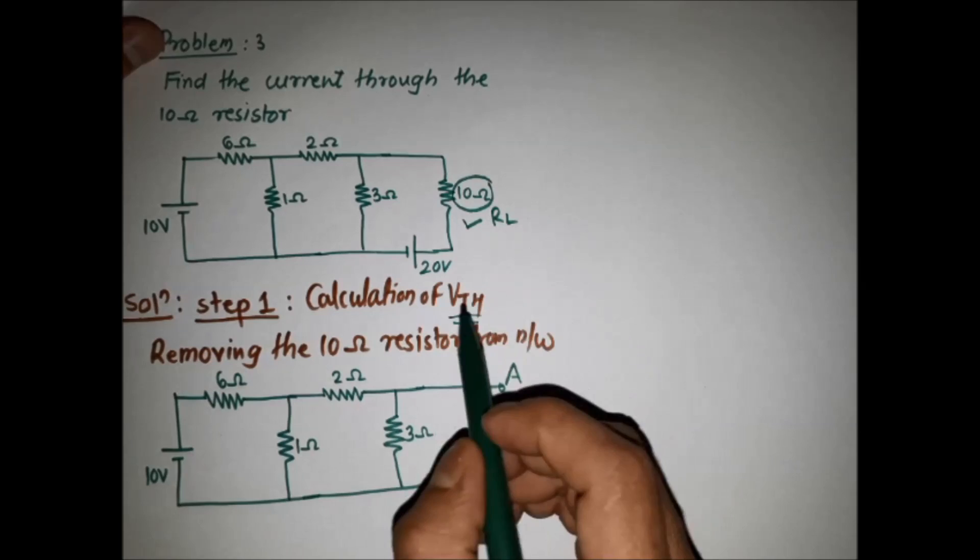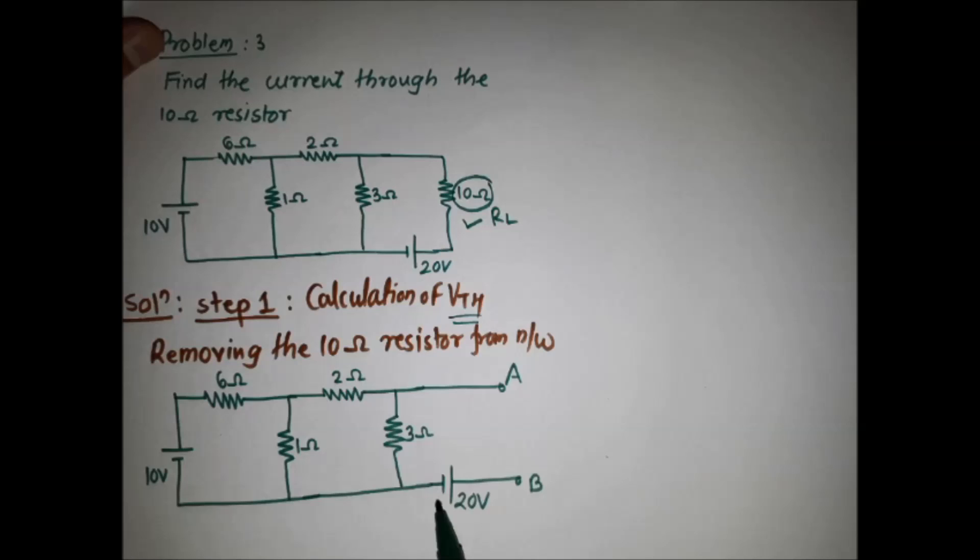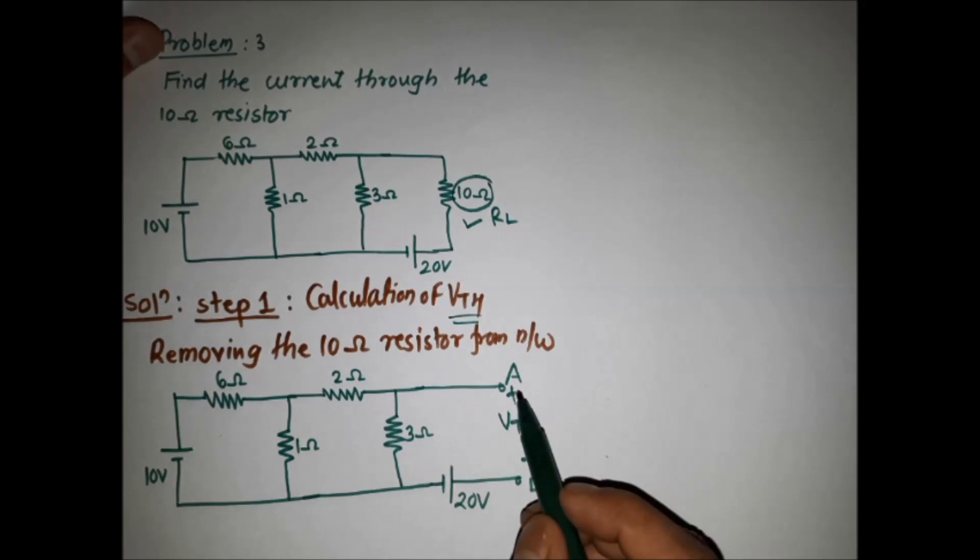We remove the load resistor of 10 ohm, leaving terminals A and B open. All the remaining network between these two terminals is considered, and we find VTH. Terminal A is considered as plus and terminal B as minus.